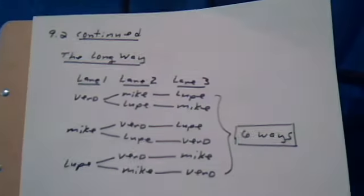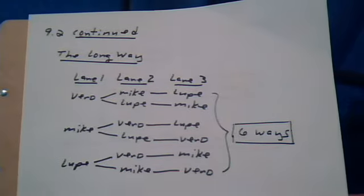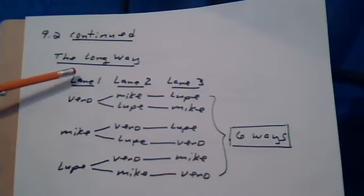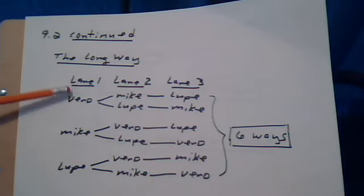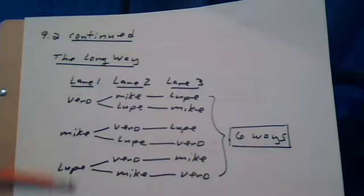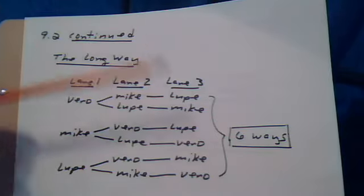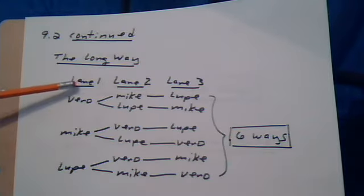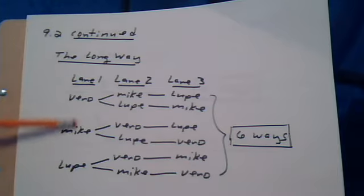So the long way is to draw a tree diagram. And notice how it's put together. When you're going to assign lane one, there are three people available. Lane one would be like the first step of the procedure of assigning the lanes. So in step one, you have to assign lane one and you have three people available.